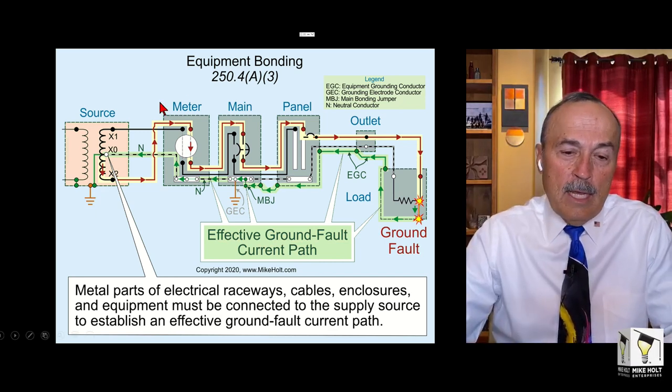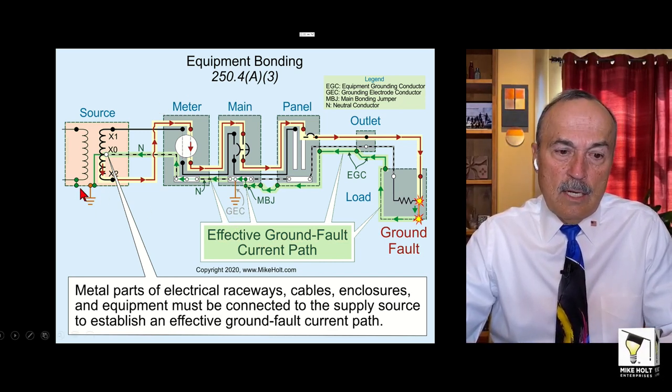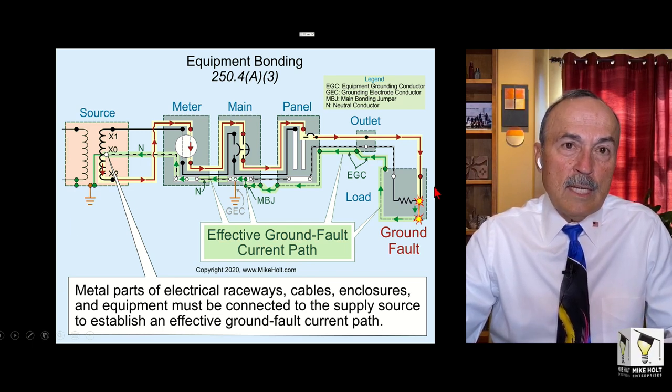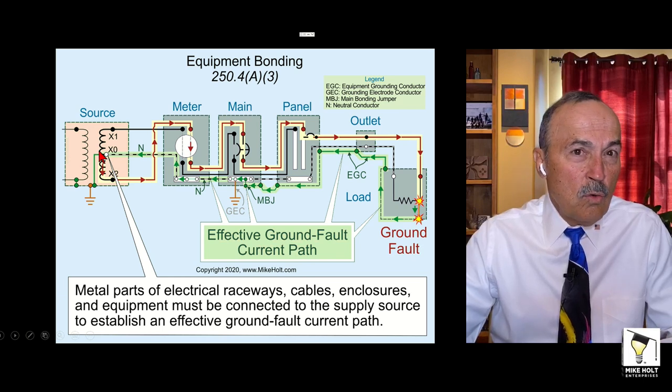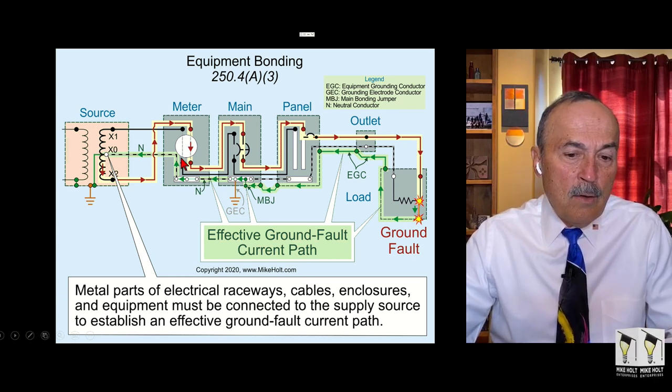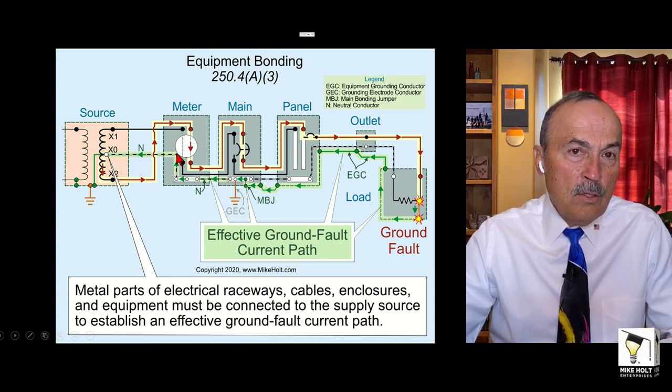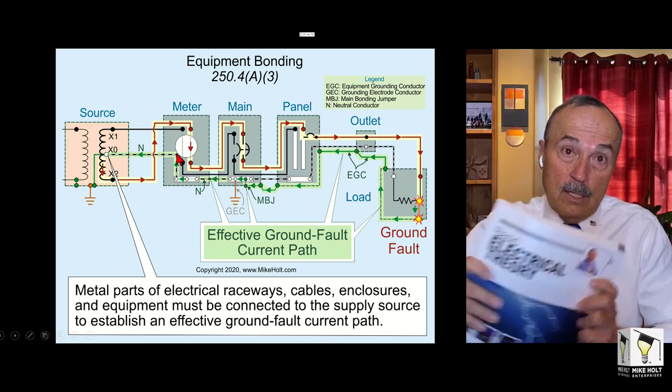For those of you guys that really know what's going on, if you have the service grounded at this location here and you have the source grounded at this location here, when the ground fault current is returning back over to the source, depending upon what that impedance is on that neutral - impedance, Ohm's law theory, 30 ohms, whatever the number might be.